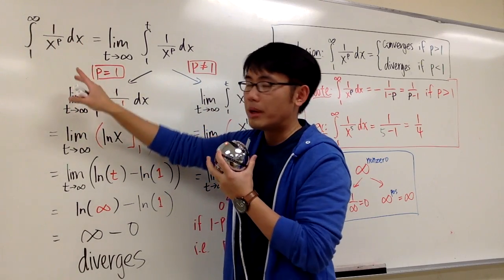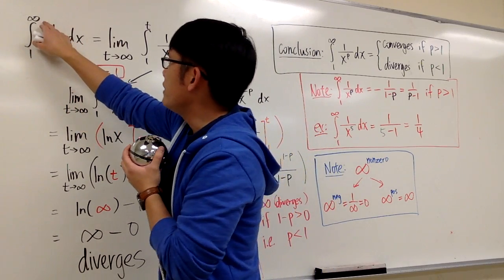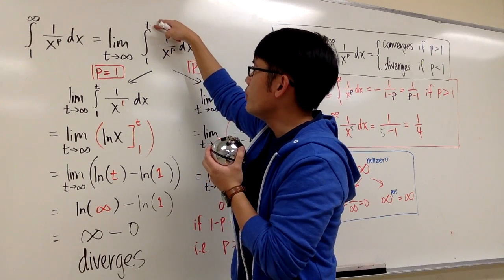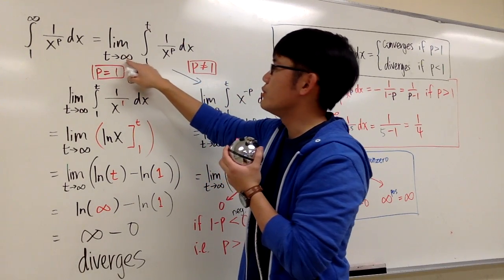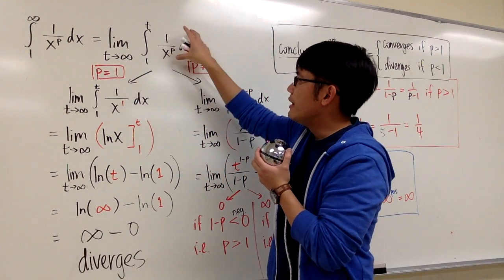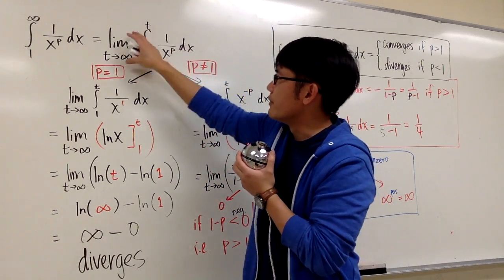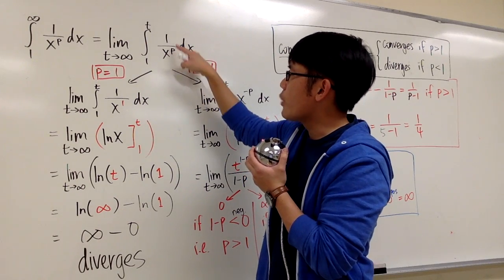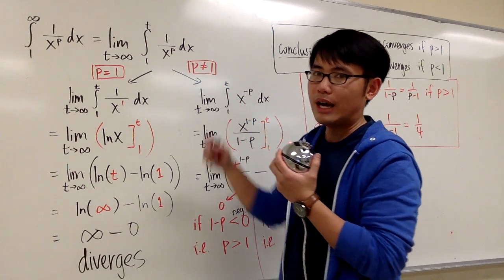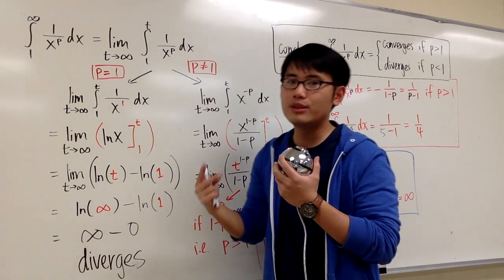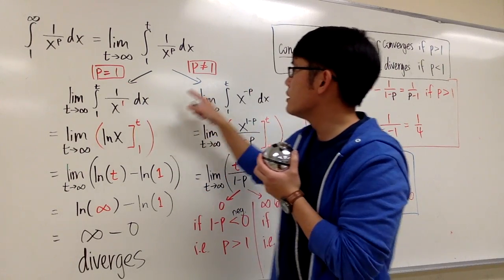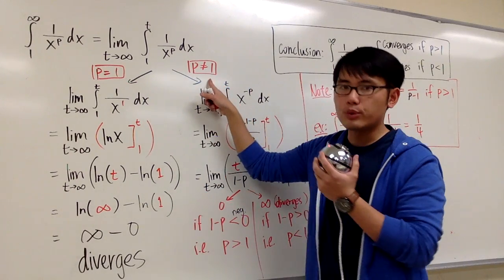By definition, we change the infinity to a t value, and then take the limit as t approaches infinity. To integrate 1 over x to the p power, we have to consider two cases: when p is equal to 1, versus when p is not equal to 1.